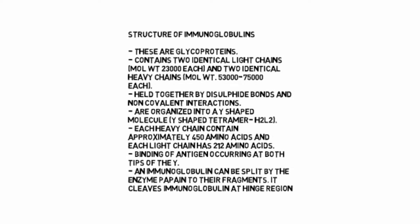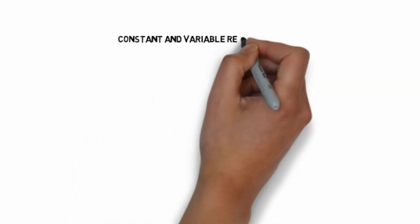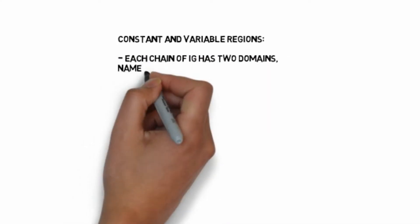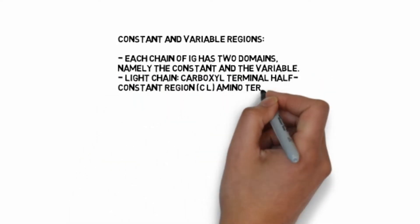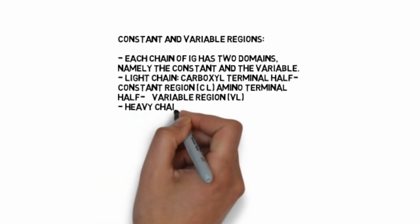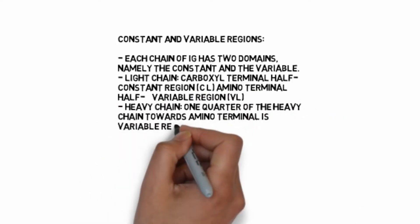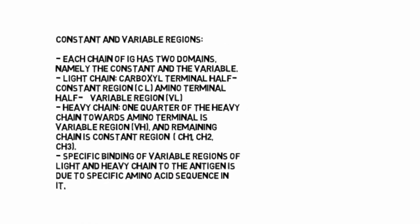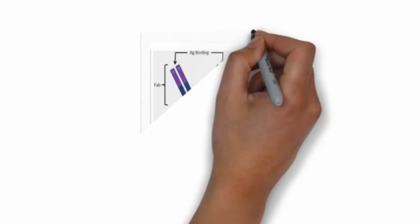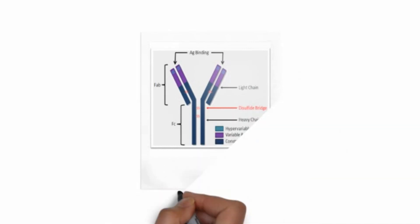An immunoglobulin can be split by the enzyme papain into fragments. It cleaves immunoglobulin at hinge region. Constant and variable regions: each chain of Ig has two domains, the constant and the variable. Light chain: carboxyl terminal half is constant region denoted by CL, amino terminal half is variable region denoted by VL. Heavy chain: one quarter of the heavy chain towards amino terminal is variable region denoted by VH, and remaining chain is constant region denoted by CH1, CH2, and CH3.